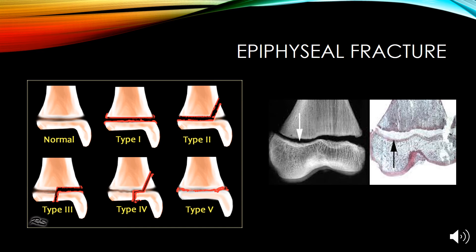An epiphyseal fracture is a fracture most often seen in children due to their bones still going through the growth process. This fracture occurs along the epiphyseal plate or growth plate of the bone. Five different types of fractures can occur that involve the epiphyseal plate. Types 3, 4, and 5 are the worst, as they can lead to premature closure of the growth plate, which can result in limb shortening or stunted growth.